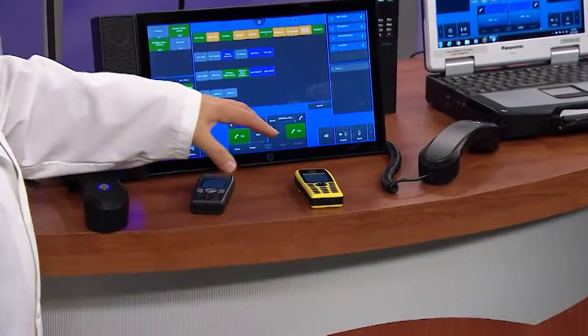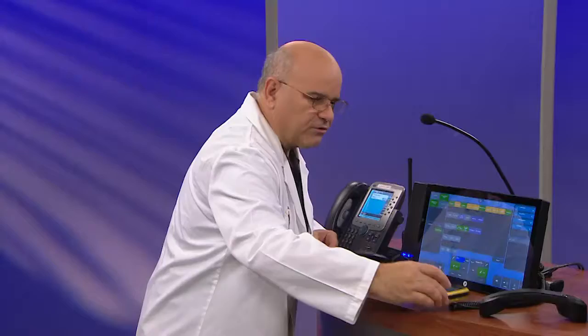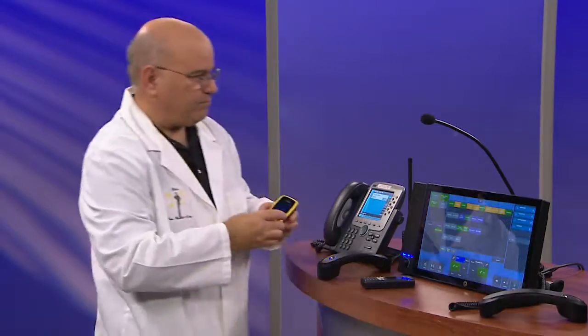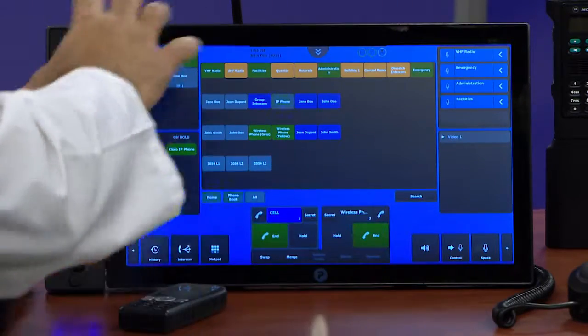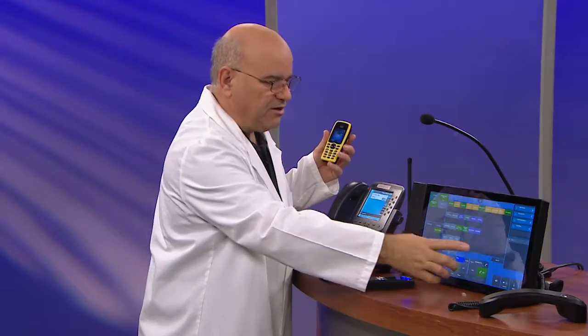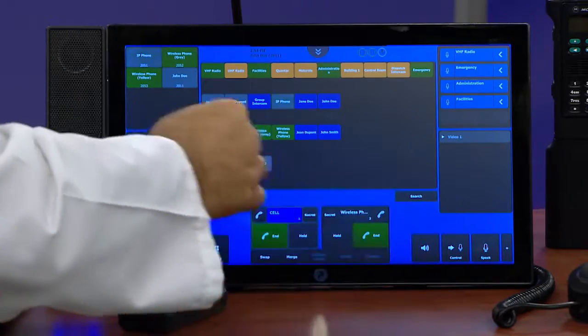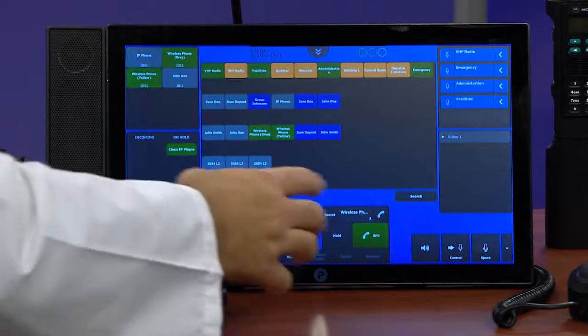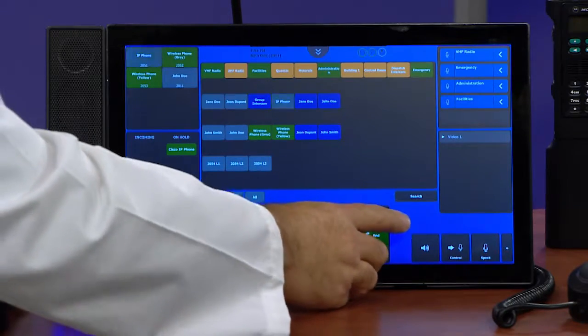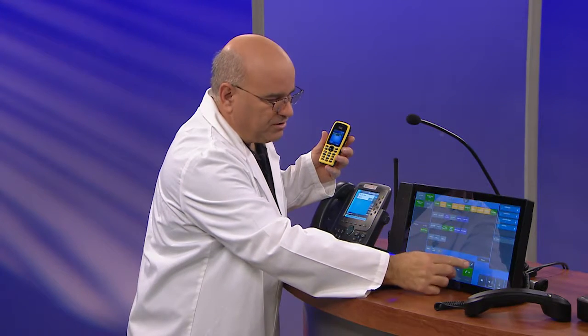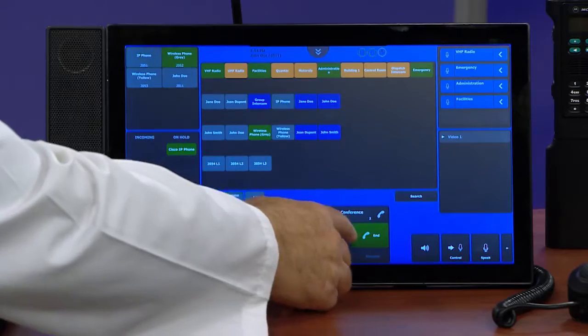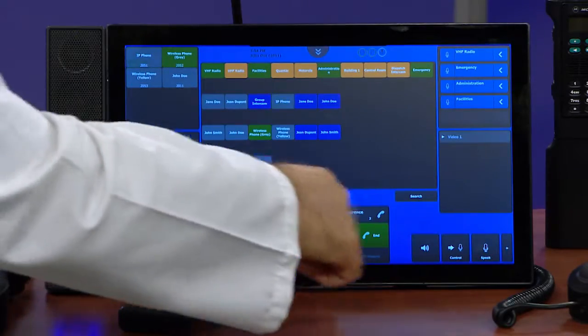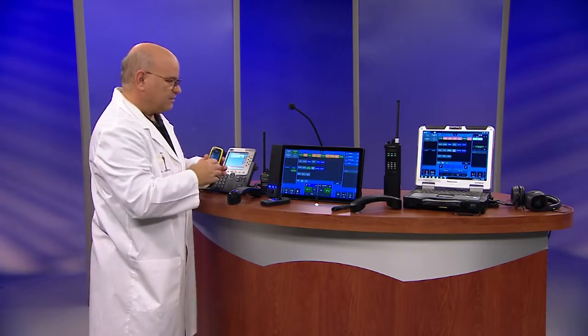So now I have all my telephony going. I can do things like merge the calls together. Because this is a capacitive touch screen, I can actually use gestures like I would on other capacitive touch screen devices. And I can bring these phone calls together. Now I've got a conference between these devices here on this bridge.